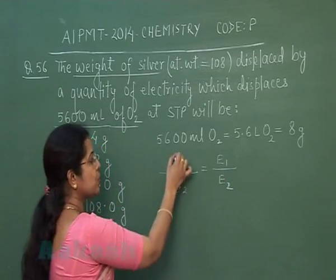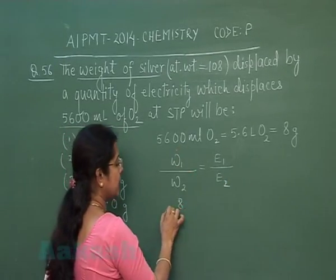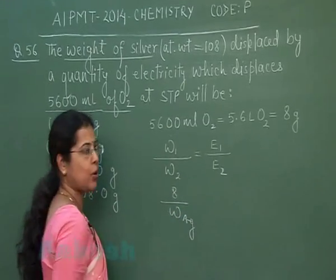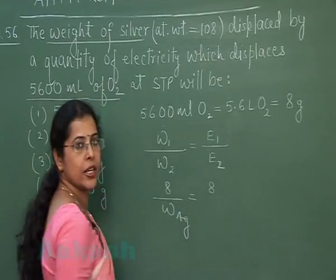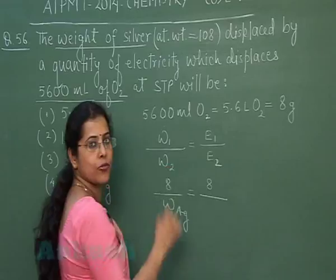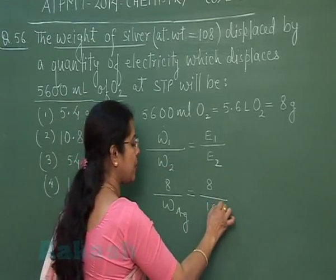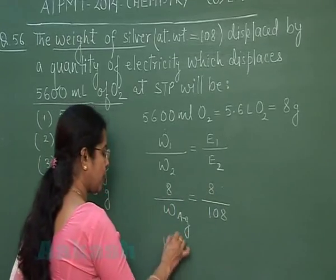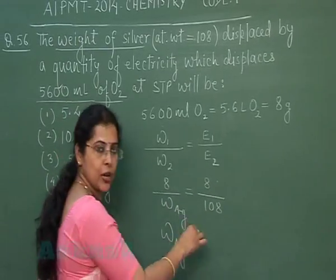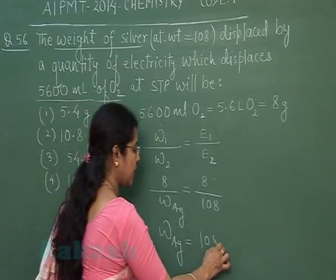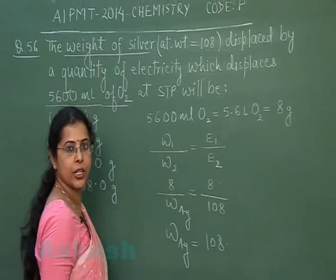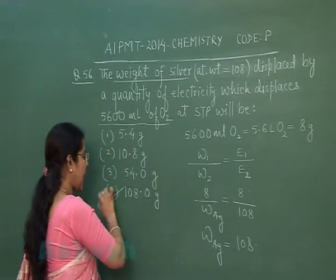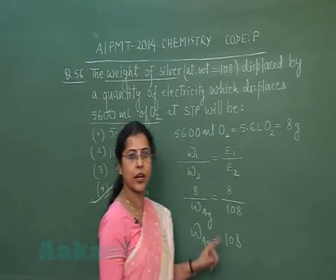Mass of oxygen is 8 grams; we need the mass of silver deposited. The equivalent mass of oxygen is 8, and the equivalent mass of silver is its atomic mass divided by valency (108 ÷ 1 = 108). Solving, the weight of silver deposited is 108.0 grams — the fourth option, which is correct.